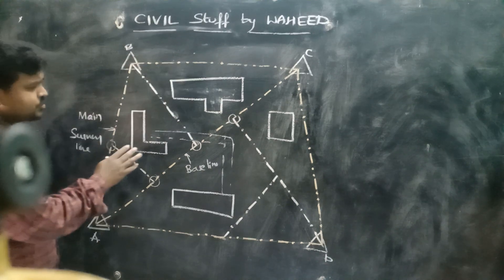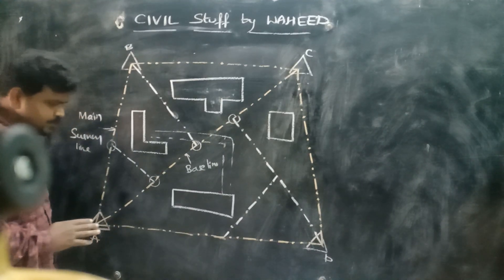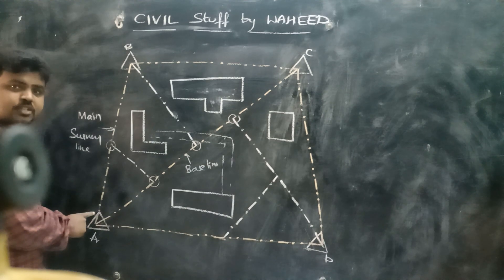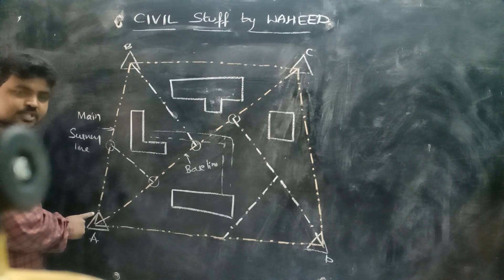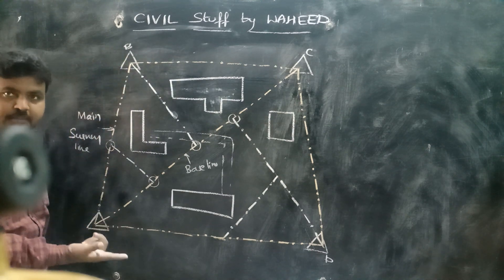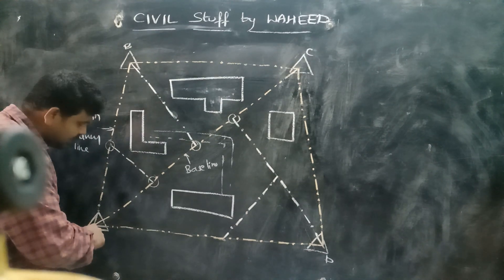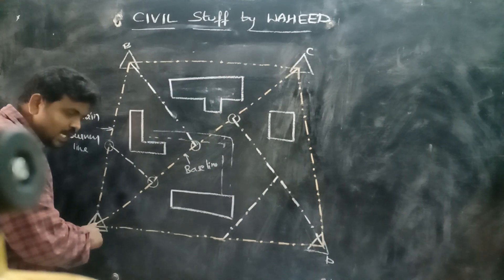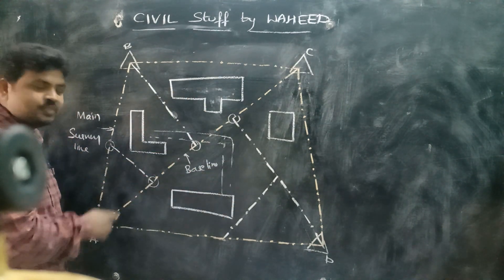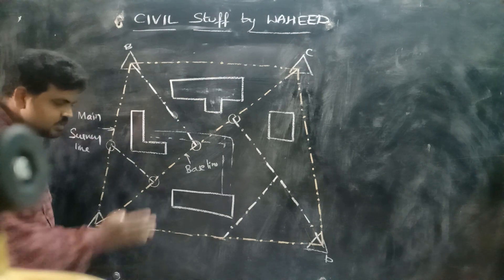The line joining any two main stations is nothing but a main survey line. The baseline is the largest line among the whole area, which is taken as a reference.